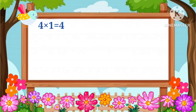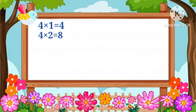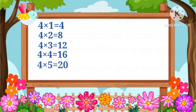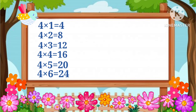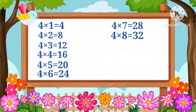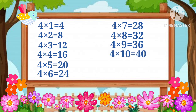4 one's a 4, 4 two's a 8, 4 three's a 12, 4 four's a 16, 4 five's a 20, 4 six's a 24, 4 seven's a 28, 4 eight's a 32, 4 nine's a 36, 4 ten's a 40.